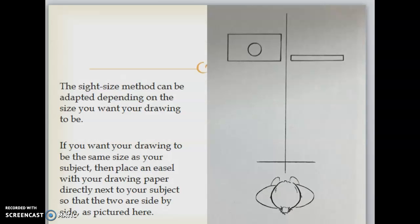The sight size method can be adapted depending on the size you want your drawing to be. If you want your drawing to be the same size as your subject, then place an easel with your drawing paper directly next to your subject, so that the two are side-by-side, as pictured here.